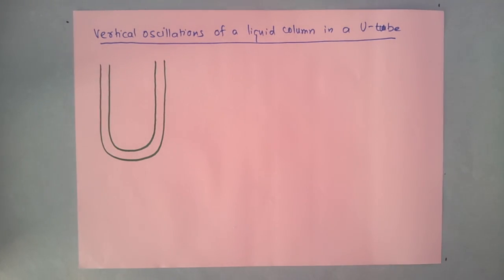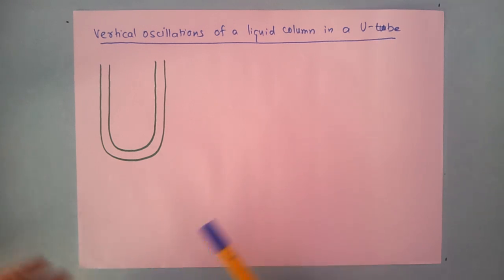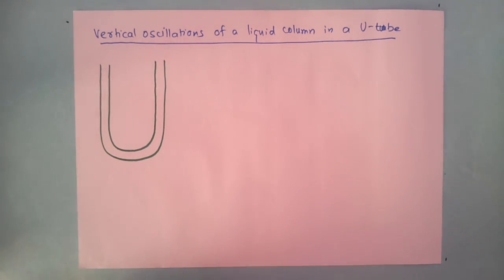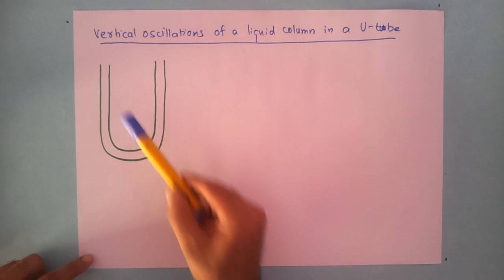One more example of simple harmonic motion. We will look at vertical oscillations of a liquid column in a U-tube.